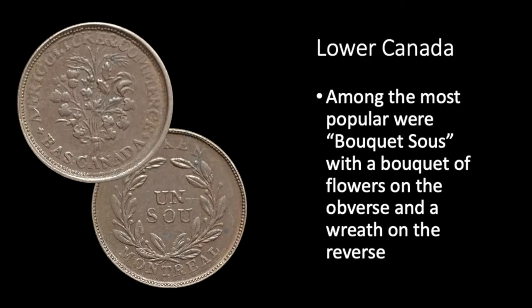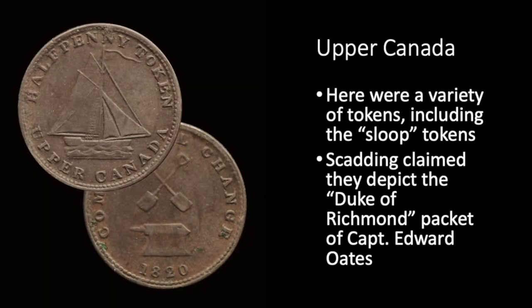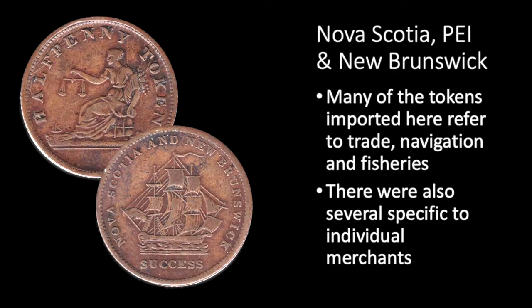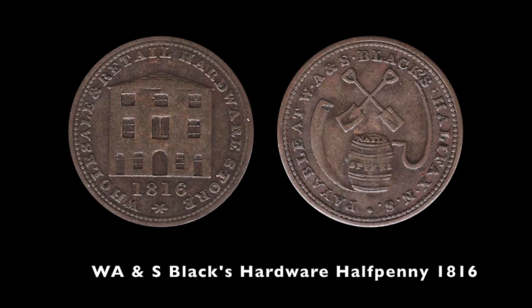While bouquet sous were the most popular tokens in Lower Canada, in Upper Canada one of the most common tokens in this period depicted a sailing sloop. In an article published in 1880, Toronto historian Henry Scadding claimed these tokens depict the sloop Duke of Richmond, though it seems like a pretty generic depiction of Lake Ontario shipping, and Scadding's account may be apocryphal. Not surprisingly, many tokens imported into Nova Scotia, Prince Edward Island, and New Brunswick depict ships and have slogans referring to trade, navigation, and fisheries, while others were issued by individual businesses such as hardware stores and wholesale importers.